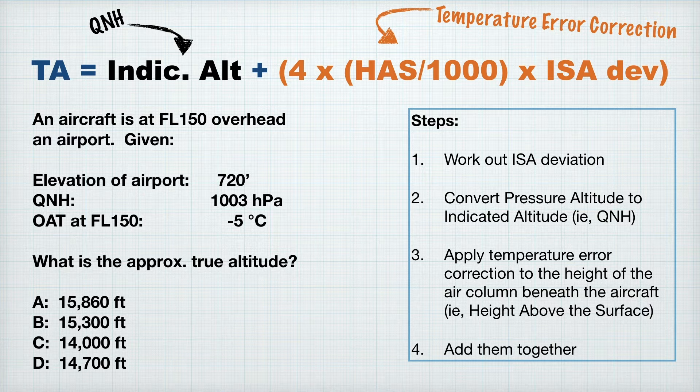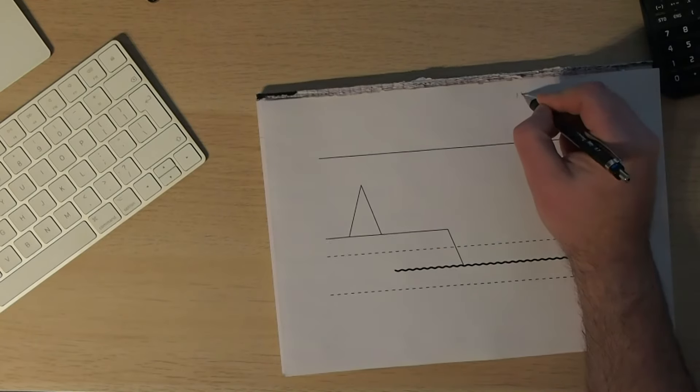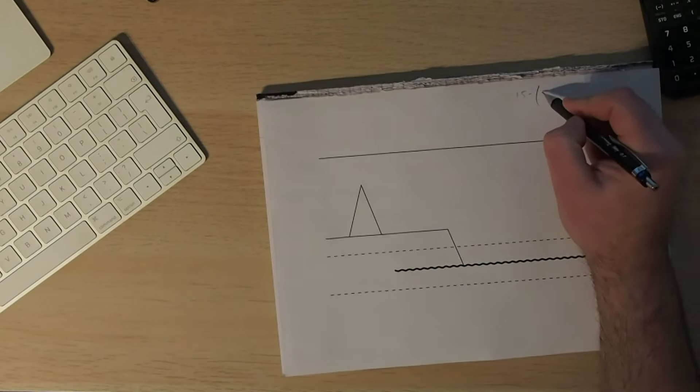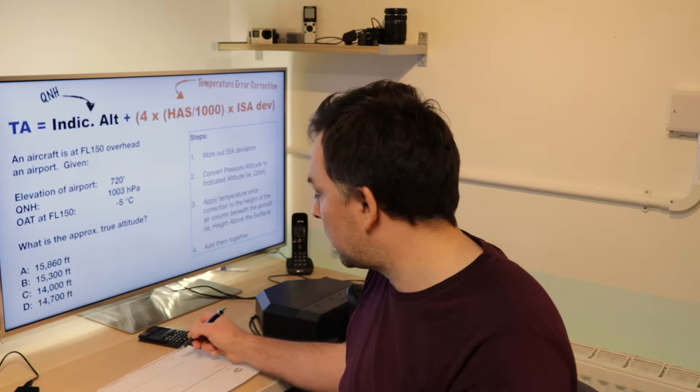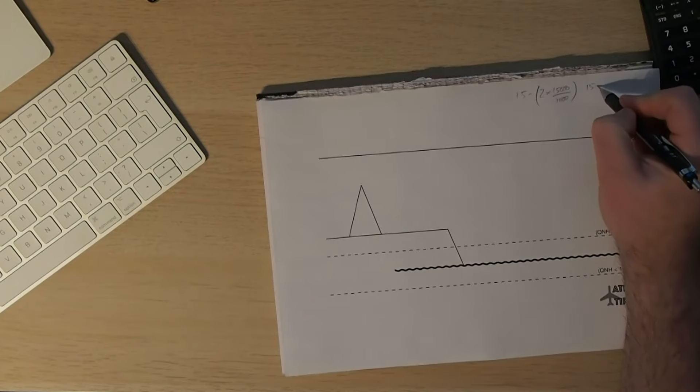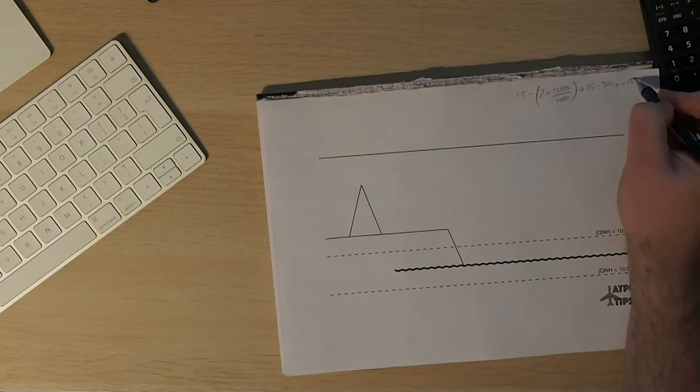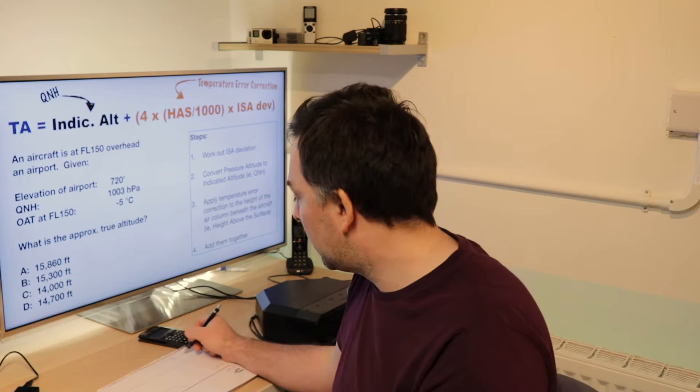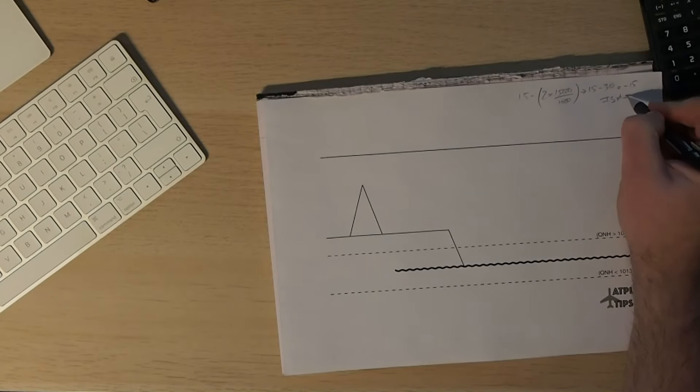The first thing that we want to do is work out our ISA deviation. Now, we're at 15,000 feet, and we know that we can do 15 minus 2 times 15 to work out our ISA deviation. That actually works out as 15 minus 30, which is minus 15. Now, our outside air temperature today is minus 5 degrees, so we are warmer than what it should be. We're 10 degrees warmer, so we are ISA plus 10.